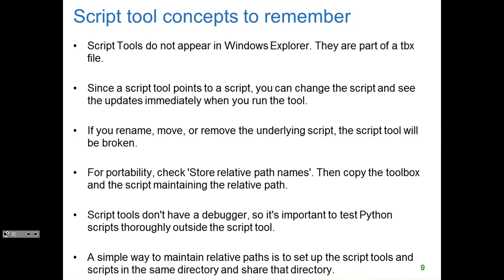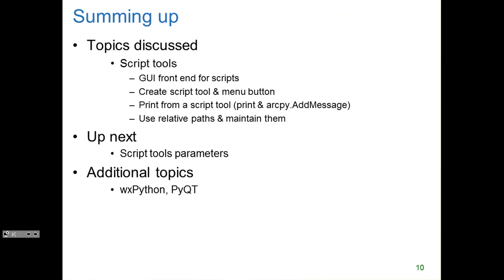While developing your script tool, if you change your script, run it again outside in another IDE. A simple way to maintain relative paths is to set up the script tools and the scripts in the same directory and then pass that entire directory along. In summary: script tools are graphical user interface front ends for scripts, created inside a toolbox. Use the print statement for output outside script tools and the arcpy AddMessage method for printing inside the geoprocessing window. Use relative paths to share your tools with others.